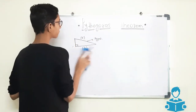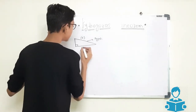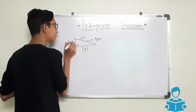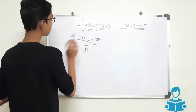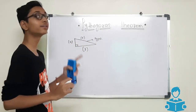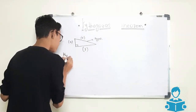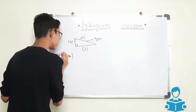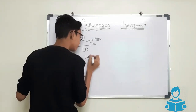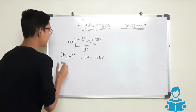If you have the value of B, say B is 3, and you have to find the value of A, and you have the value of hypotenuse. We will find the value of A using the formula: hypotenuse square is equals to A square plus B square.